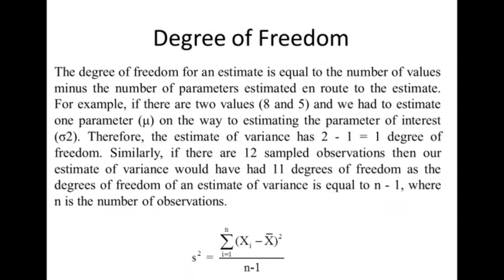When we use t-distribution, we must use degrees of freedom. Degrees of freedom: when finding standard deviation, we need x-bar, so we are estimating one parameter (mu) using x-bar. We subtract the number of estimated parameters from total observations. For example, with values 8 and 5, to find sigma squared we need the mean estimate — estimating one parameter from two values gives 1 degree of freedom.